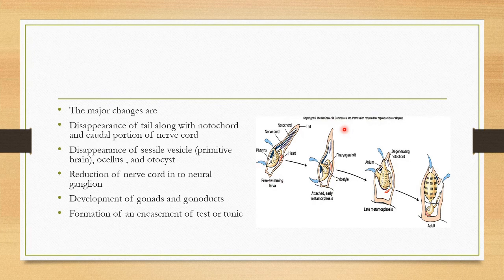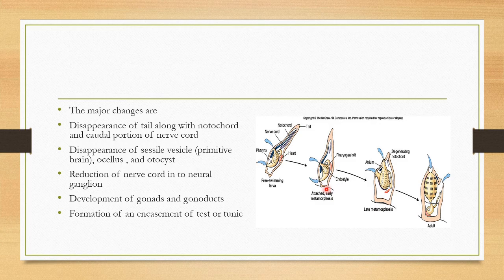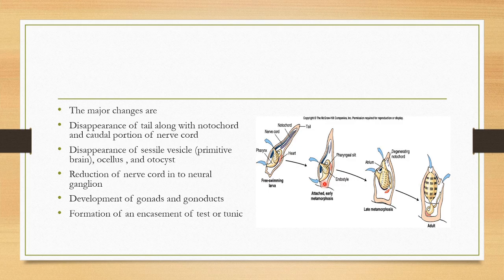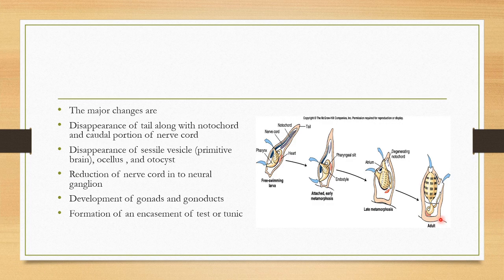So what are the major changes? The first change during retrogressive metamorphosis is attachment to the substratum. Second one is degeneration of nerve cord and the notochord and tail region. And third one is the shifting of mouth from the lower surface to the upper surface. And finally, it becomes a sedentary adult. So this is called retrogressive metamorphosis.